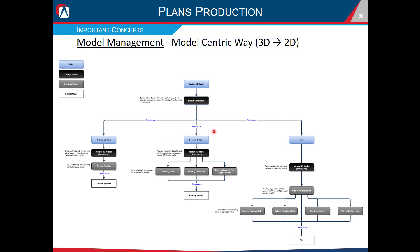In the second scenario — the footing detail sheet — it's a similar setup: a separate DGN file with a design model referencing the master 3D model. From there we make section cuts to create 2D content. In this case I have a section cut for a footing plan view, a footing elevation view, and a footing column bar section view — three different drawing models from cuts within the design model. All three drawing models then get referenced onto a single sheet model to produce the final plan sheet.